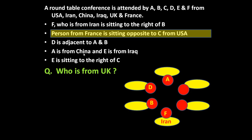Next: A is from China and E is from Iraq. A is here, so A is from China. But where is E? We don't know, so let us underline that E is from Iraq and come back to it. The next statement is E is sitting to the right of C. C and E are the two missing persons, and there are two vacant positions, so C will occupy one position and E will occupy the position to the right of C.